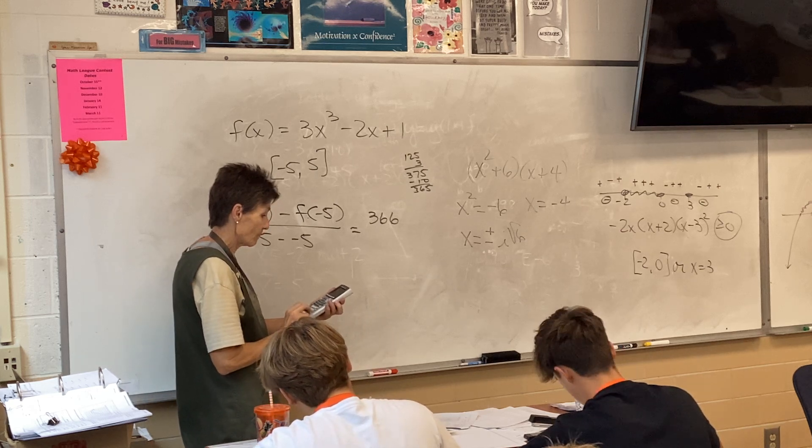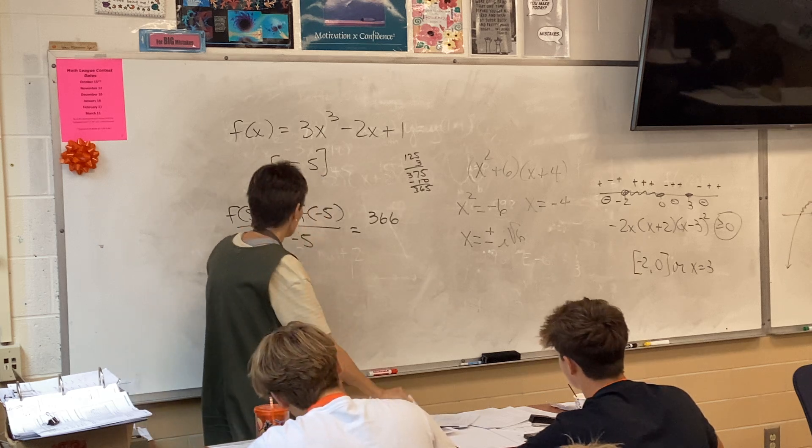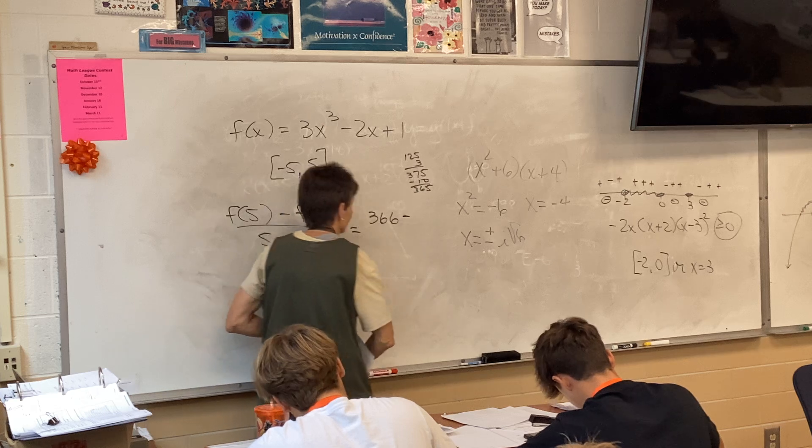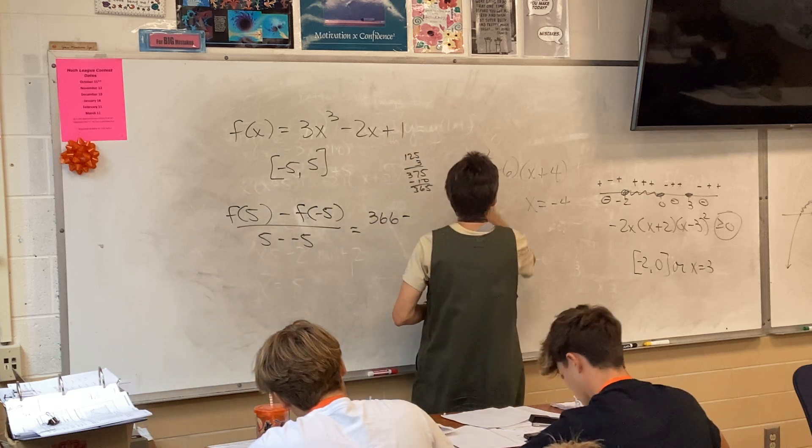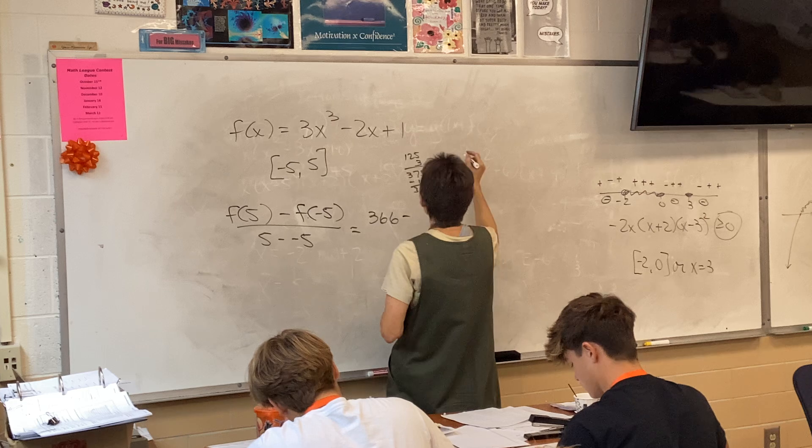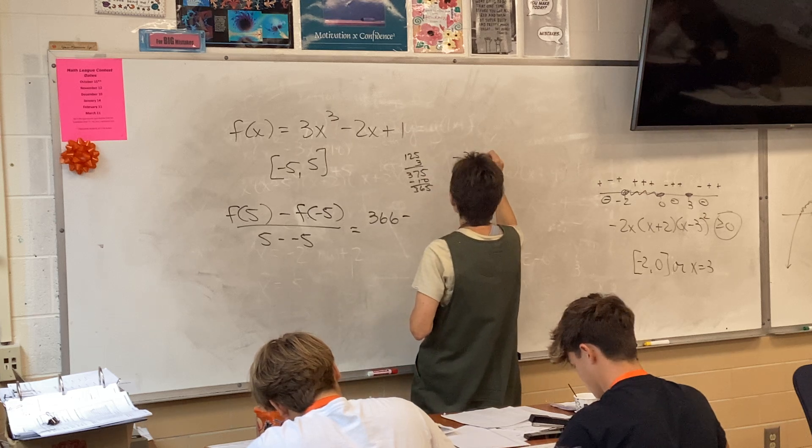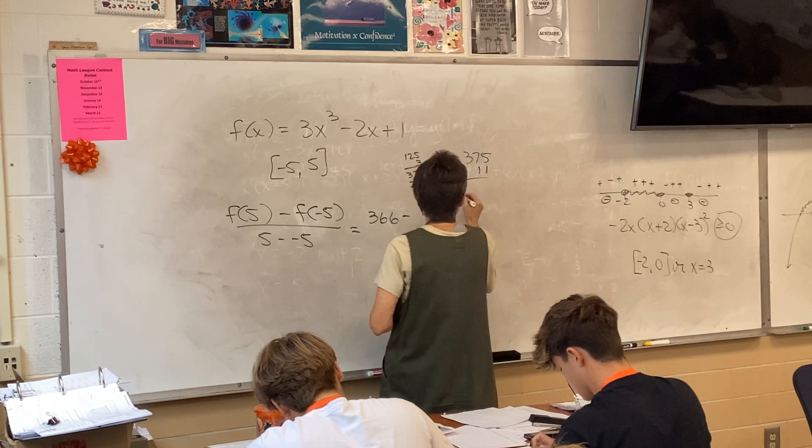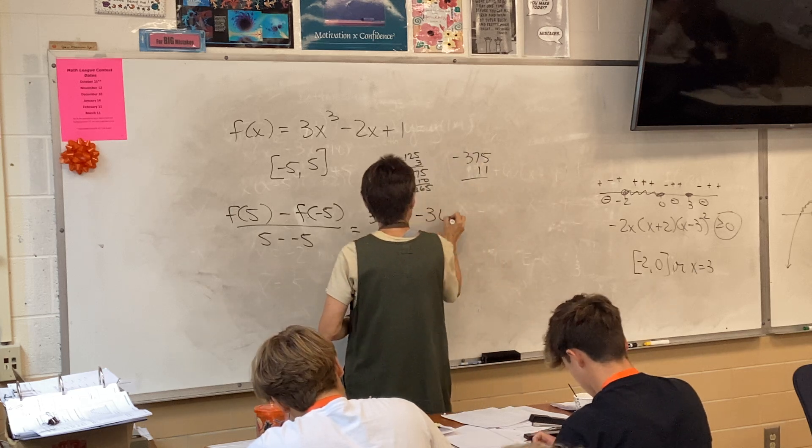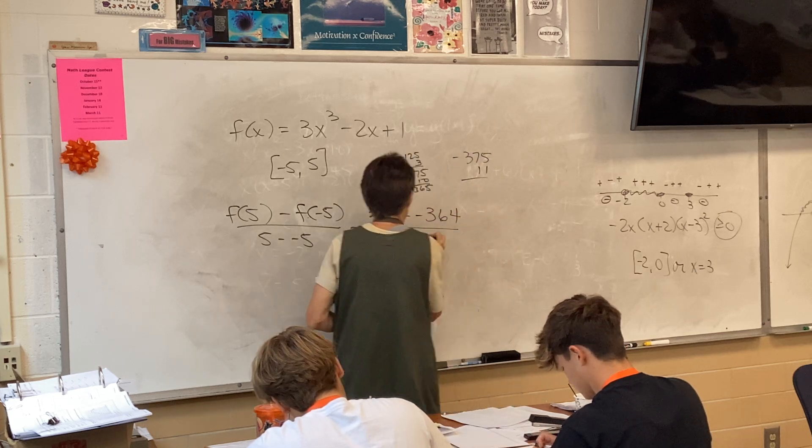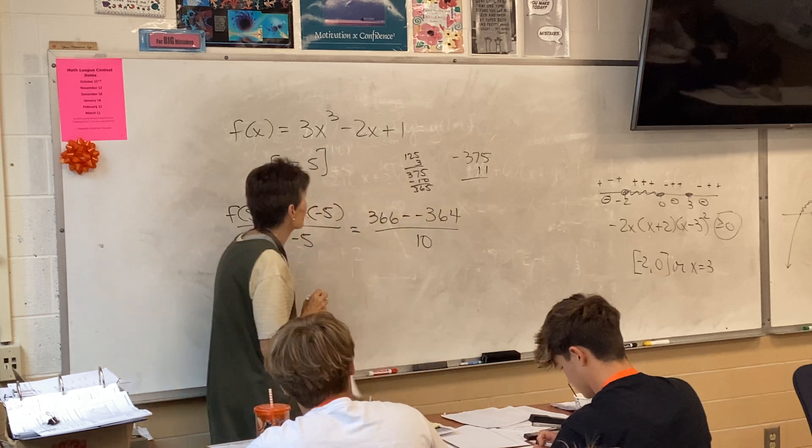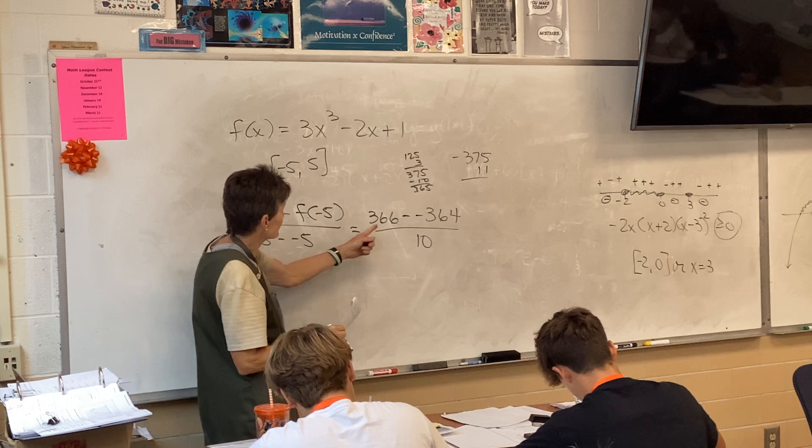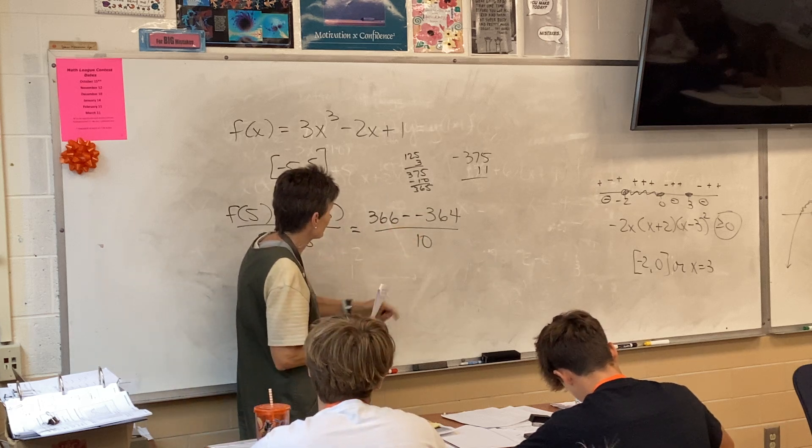Okay, now I'm going to find f of negative 5. So f of negative 5 will be negative 375 plus 11.